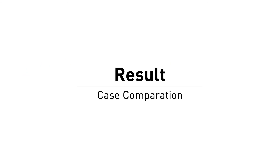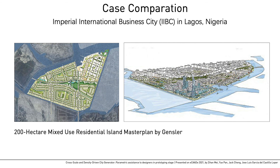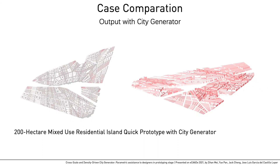We also use the Imperial International Business City in Nigeria, a 200-hectare master plan by Gensler, as a comparison case. Extracting the major road network as input, the output shows proper density distribution across the site, as well as heterogeneity in building forms. Compared to the traditional urban design process, our tool allows quick prototyping in seconds.